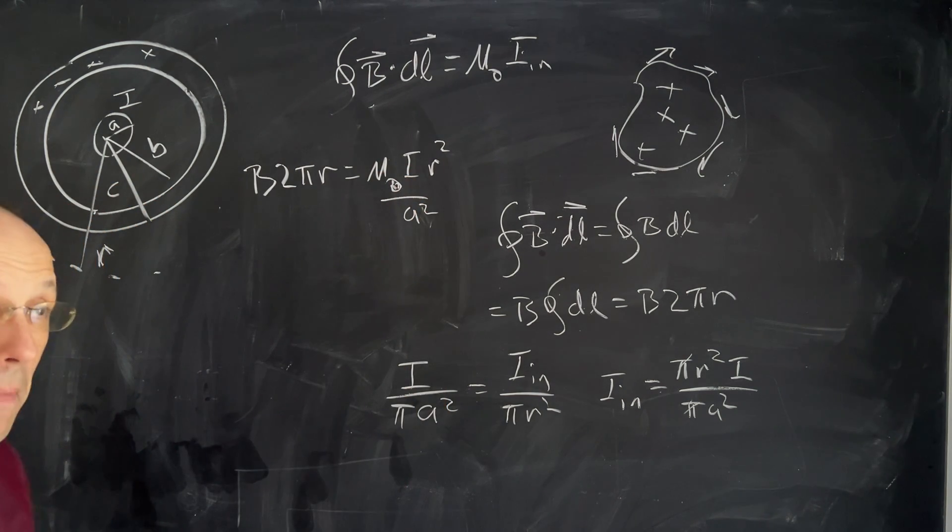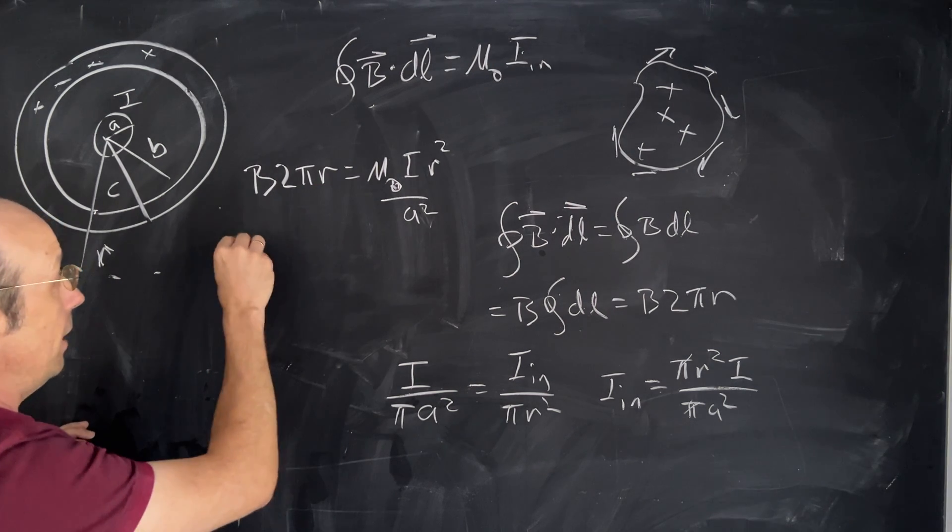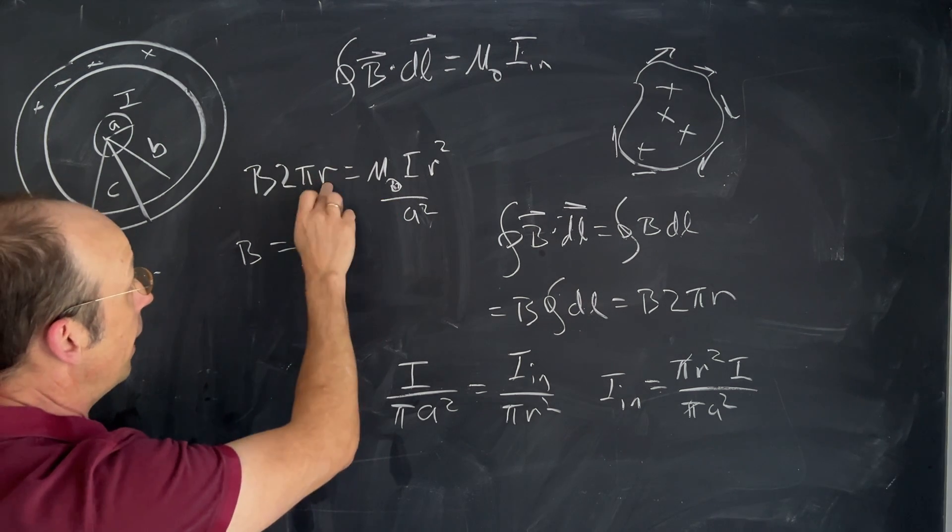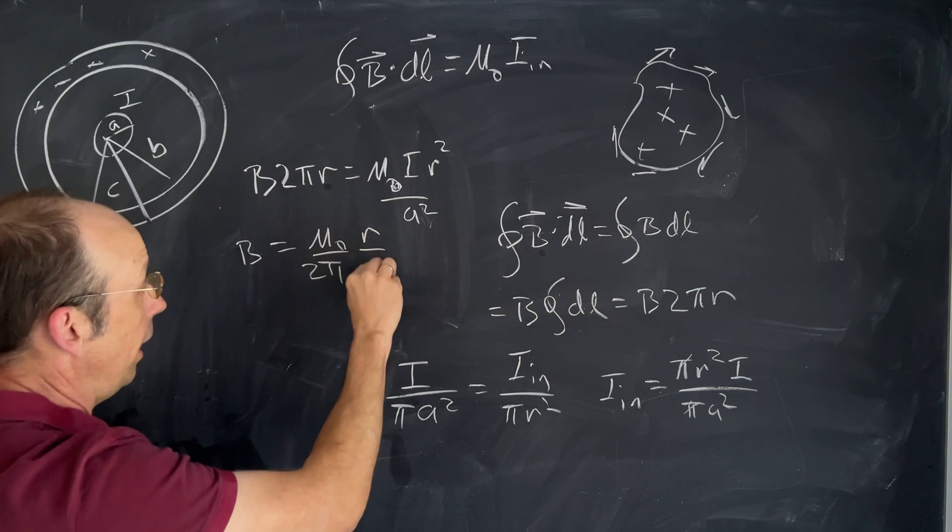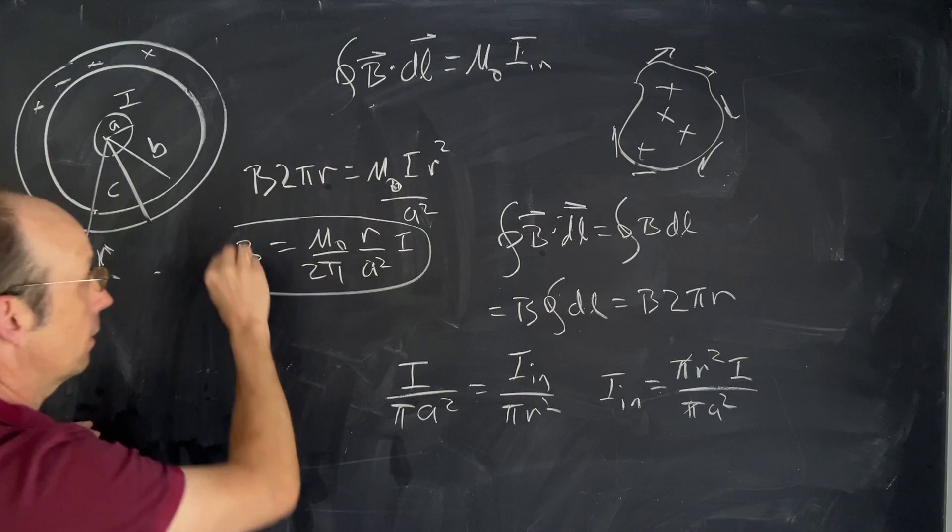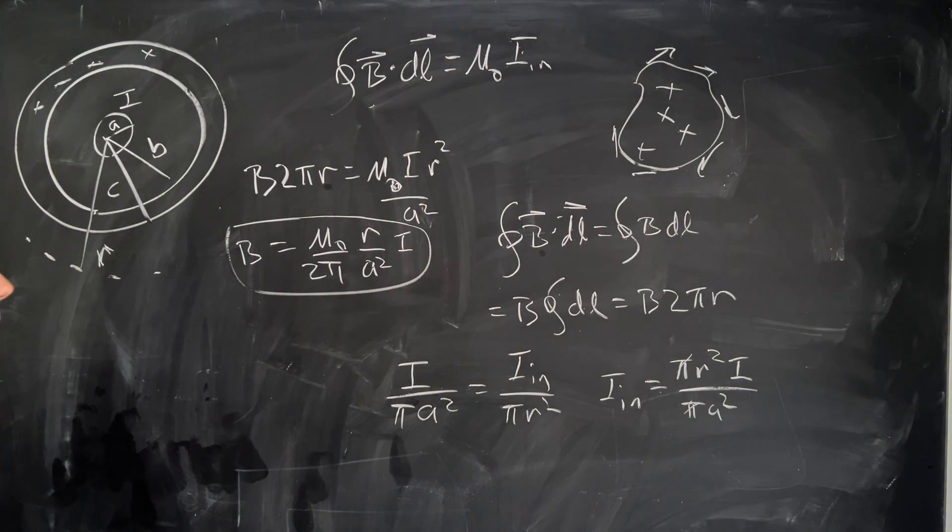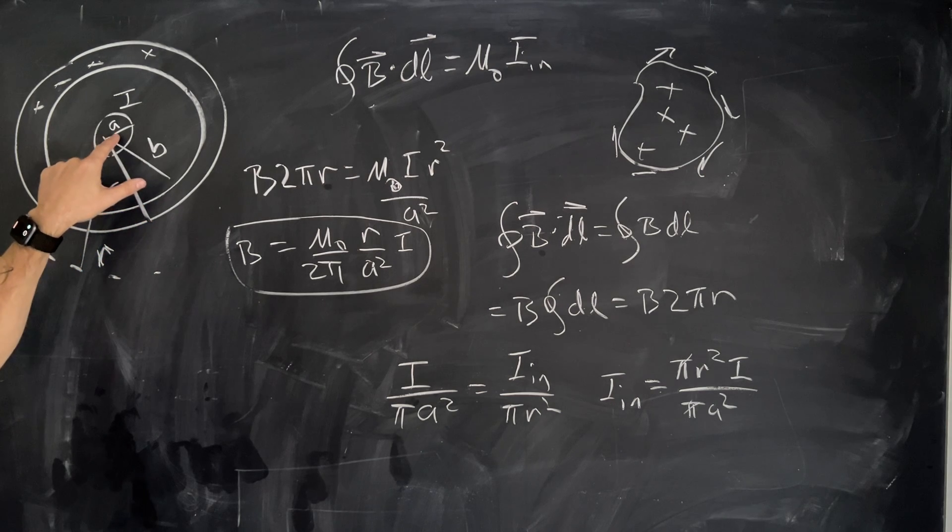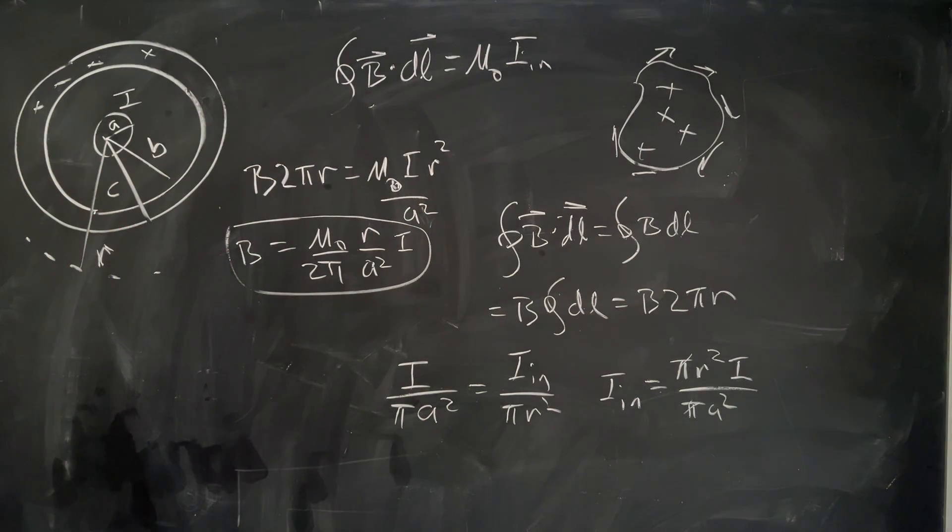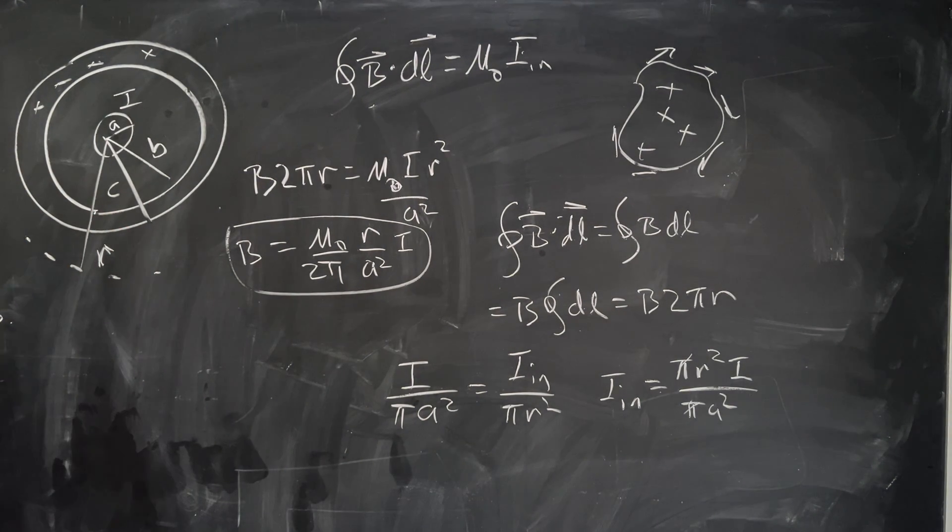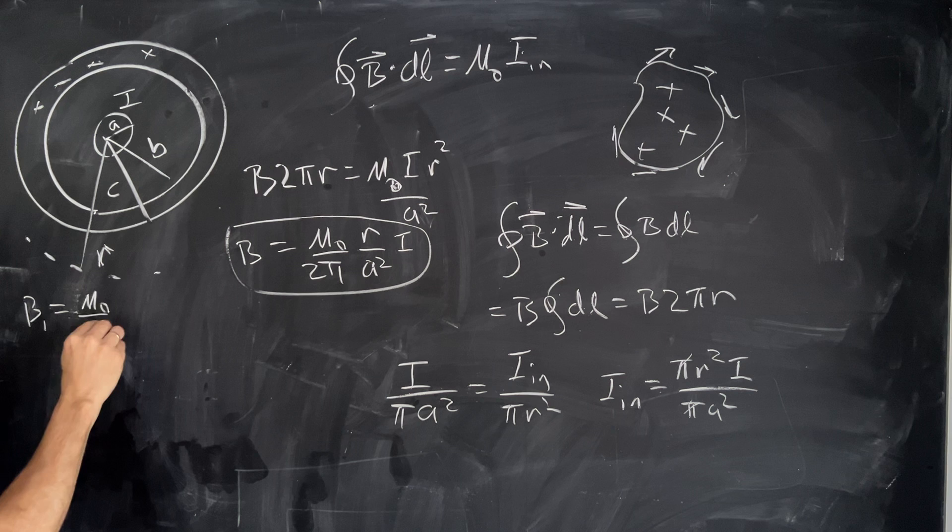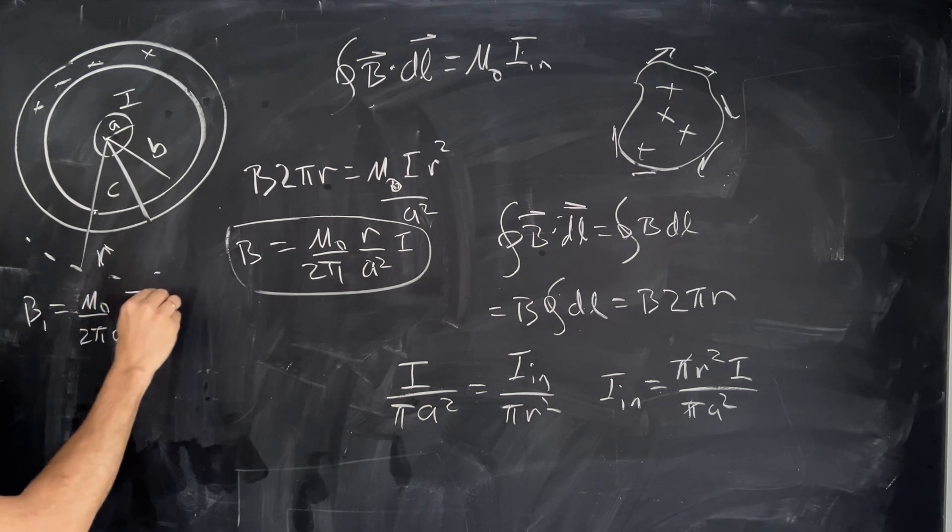So I have the path integral B 2πR equals μ₀ IN which is IR²/a². Let's solve for the magnitude of B. I'm going to divide both sides by this. I get B equals μ₀/(2π) and then one of these R's cancel so I have R/a². Let's write that down because we're going to call that B₁. So B₁ is μ₀/(2πa²) IR.